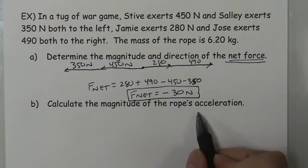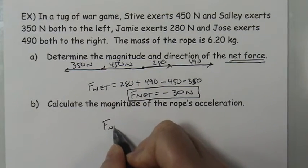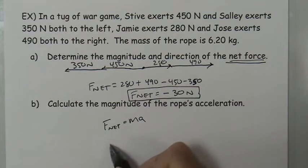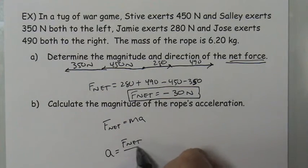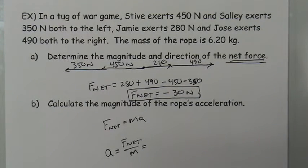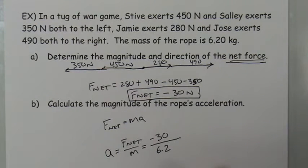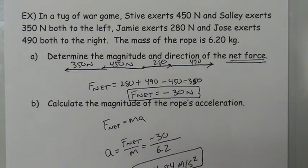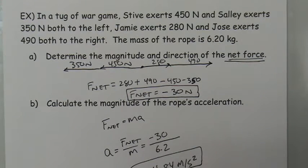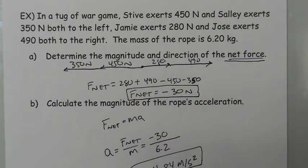Now to calculate the acceleration, we use F_net = ma, so a = F_net / m — acceleration is directly proportional to net force and inversely proportional to mass. Plugging in: negative 30 divided by 6.2 gives an acceleration of negative 4.84 meters per second squared. The negative sign indicates acceleration to the left, which we defined as the negative direction.